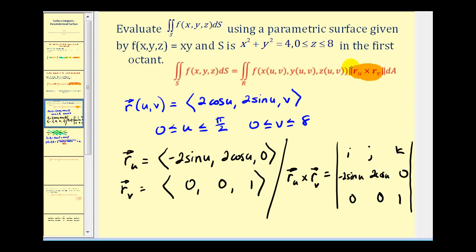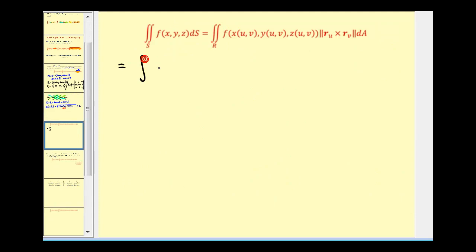All that work gave us this magnitude equal to two. Now we're going to rewrite our function x times y as a function of u and v. Where x is equal to two cosine u and y is equal to two sine u. So we'll have two cosine u, two sine u, times two, differential a.